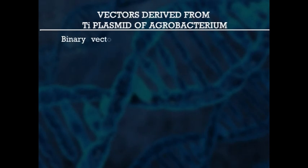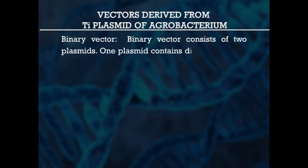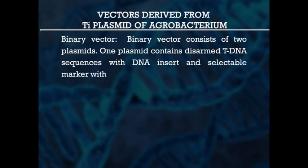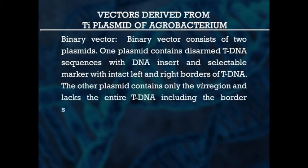Now we have binary vectors. Binary vectors consist of two plasmids. One plasmid contains disarmed T-DNA sequences with the DNA insert and selectable marker, with intact left and right borders of T-DNA. The other plasmid contains only the vir region and lacks the entire T-DNA including the border sequences. Though the T-DNA and vir region are located independently on separate plasmids, the vir region induces the transfer of T-DNA into the plant cells during Agrobacterium infection. The binary vector is introduced into the Agrobacterium from E. coli by triparental crosses.